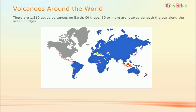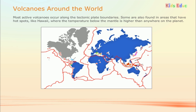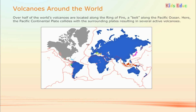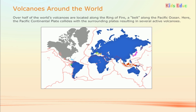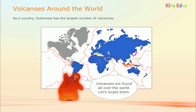There are 1,510 active volcanoes on earth. Of these, 80 or more are located beneath the sea along the oceanic ridges. Most active volcanoes occur along the tectonic plate boundaries. Some are also found in areas that have hot spots, like Hawaii, where the temperature below the mantle is higher than anywhere on the planet. Over half of the world's volcanoes are located along the Ring of Fire, a belt along the Pacific Ocean, where the Pacific continental plate collides with surrounding plates resulting in several active volcanoes. As a country, Indonesia has the largest number of volcanoes.